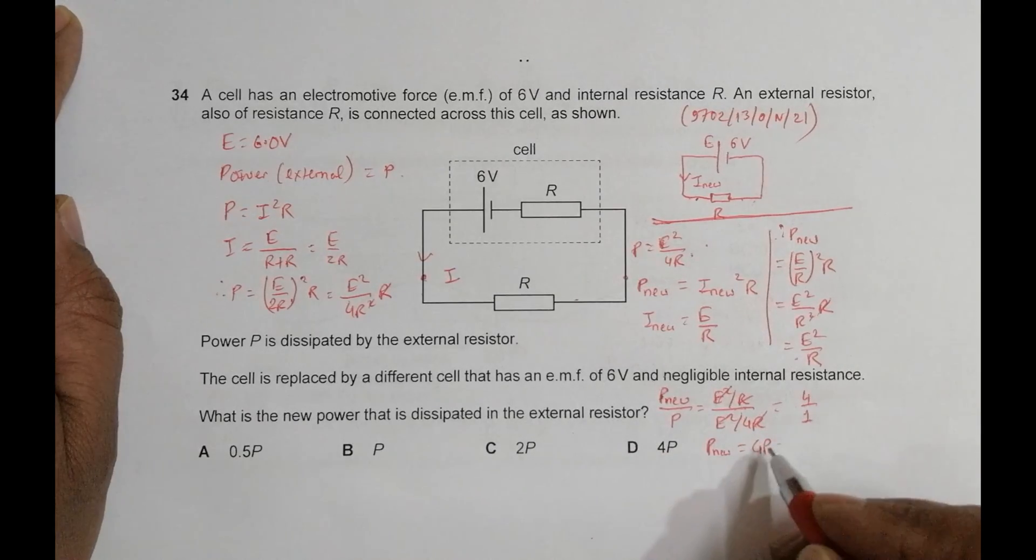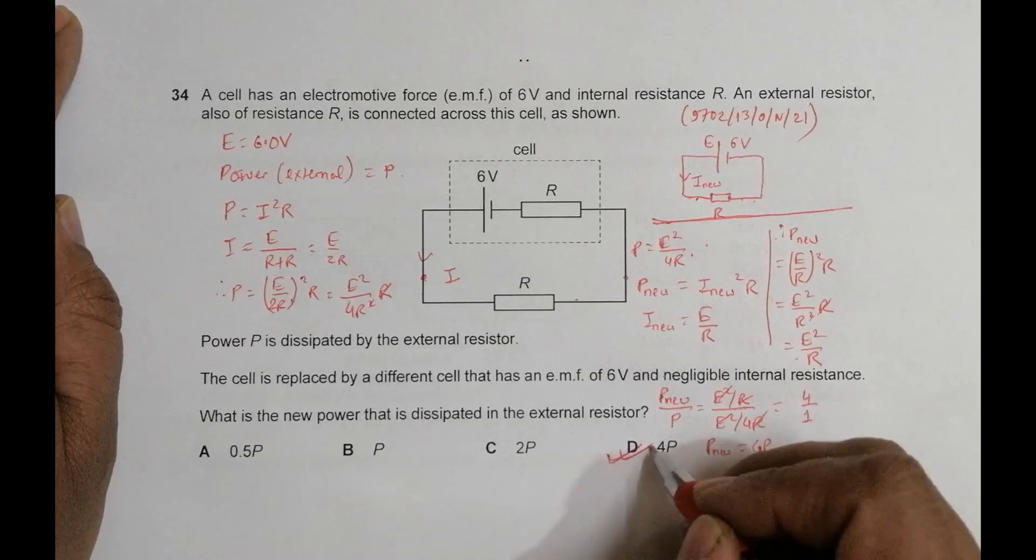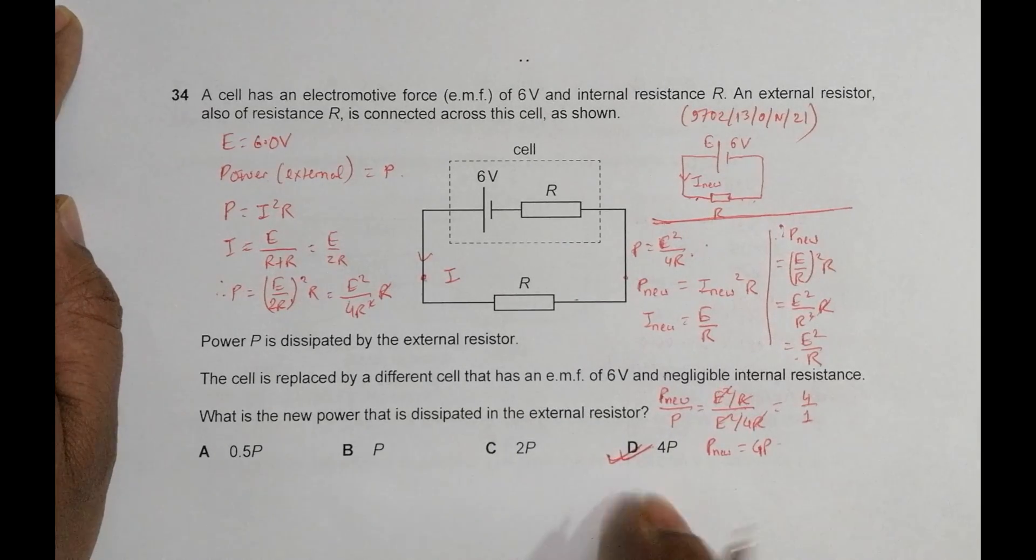So 4P is choice D, which should be the correct choice here.